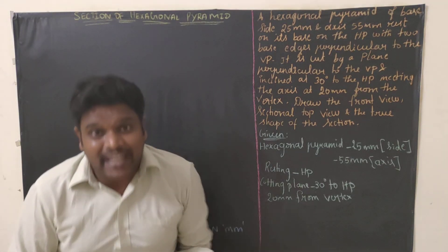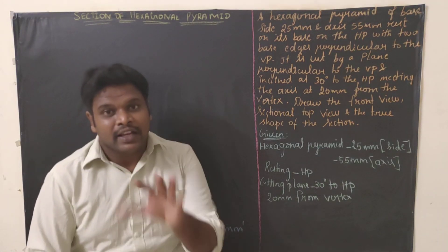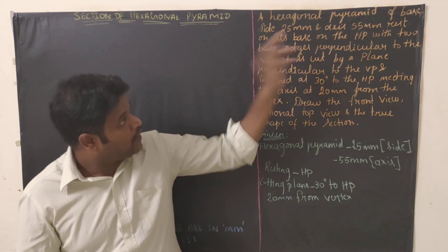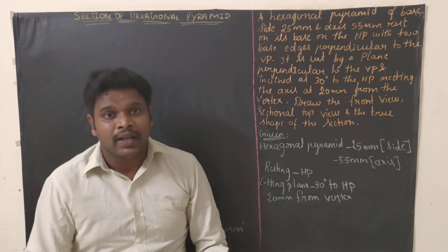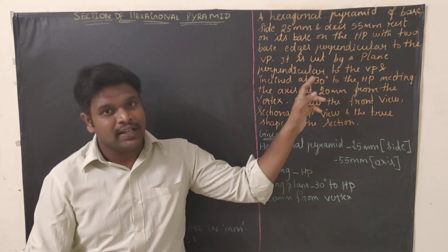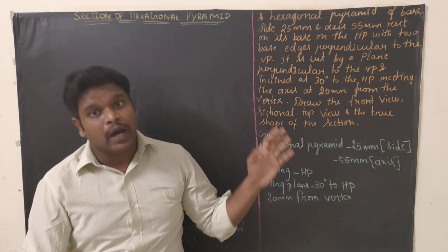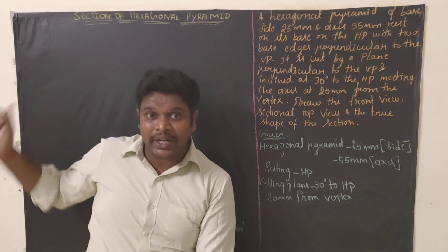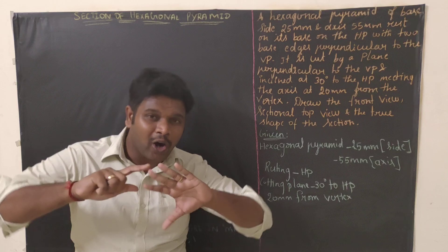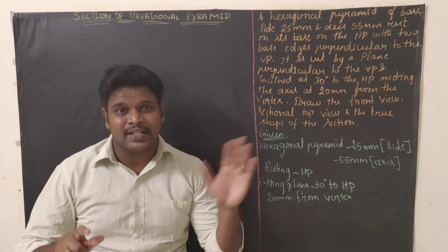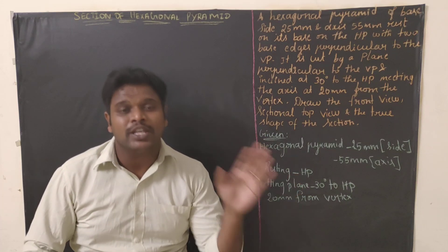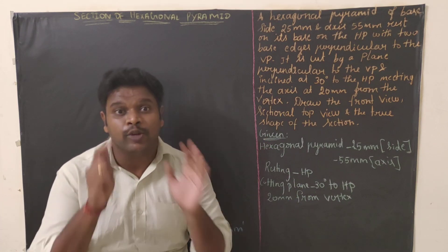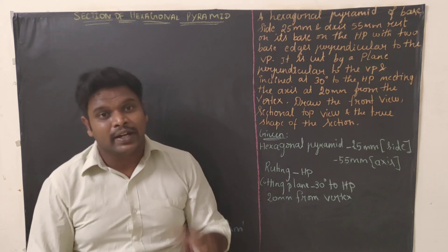Hello friends, welcome to our channel Mechanical Motivator. In this video we are going to see a program on section of a hexagonal pyramid. Initially I will explain the question, then how to write the given data, and after that how to draw the diagram step by step. If you follow all the instructions step by step, you will complete the diagram without any confusion and get full 20 marks.